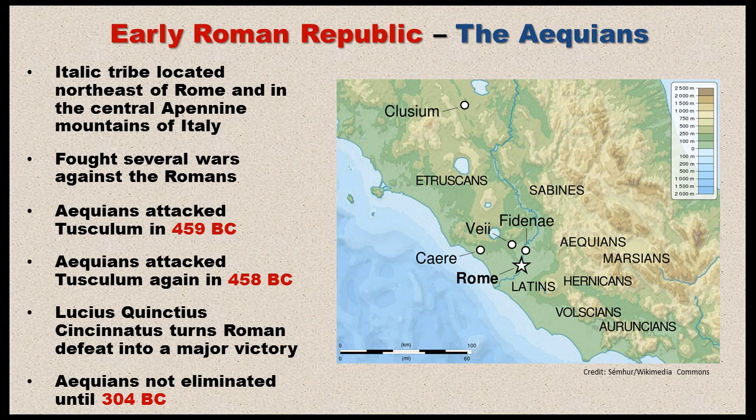Similar to the Volscians, the Romans did not defeat the Aquians in a decisive defeat, and like the Volscians, they were not eliminated until the Third Samnite War in 304 BC. That is going to do it for this video. See you in the next video where we will continue on with the Roman struggles in Central Italy.